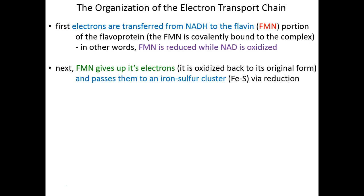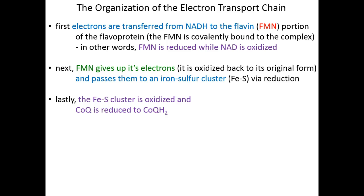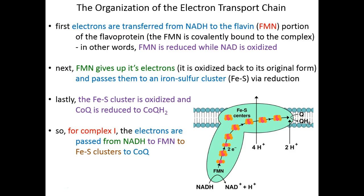FMN, in its reduced form, then gives up its electrons, returning itself to its oxidized form, and passes those electrons onto the iron-sulfur clusters, which become reduced. Lastly in Complex I, the iron-sulfur clusters are oxidized and pass the electrons to CoQ. CoQ becomes reduced to CoQH2. To summarize: electrons arrive riding the NADH shuttle, NADH gives electrons to FMN, FMN passes them to a series of iron-sulfur clusters, and iron-sulfur clusters pass them to CoQ.